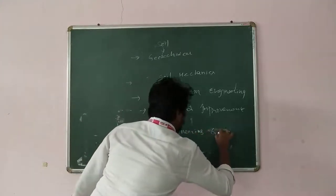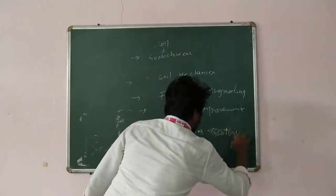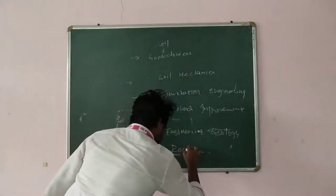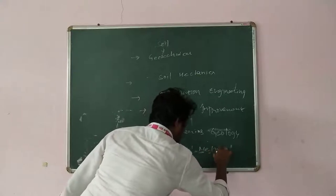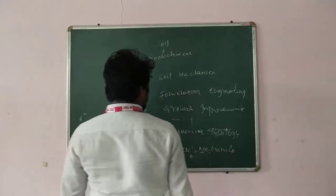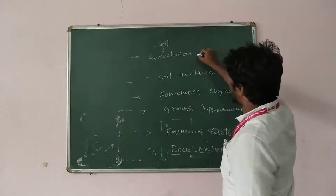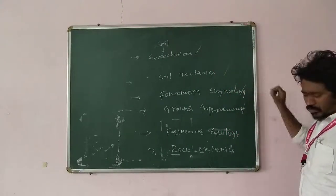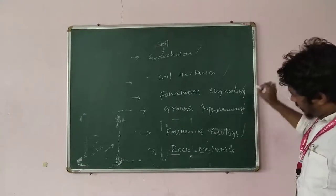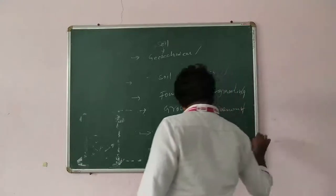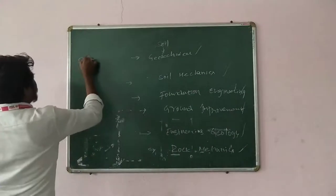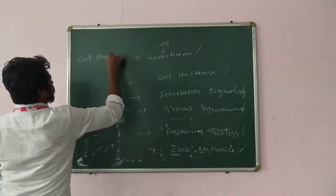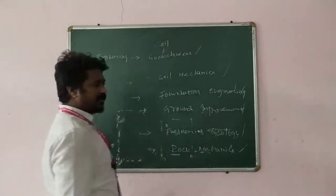After ground improvement, we study engineering geology, and after engineering geology, we go for rock mechanics and rock engineering, and next soil engineering. So why are there so many names in this particular geotechnical engineering? Why do we have to study all of them?